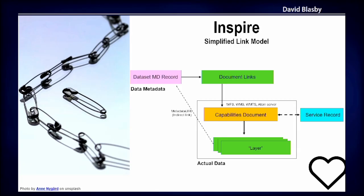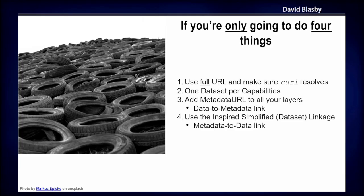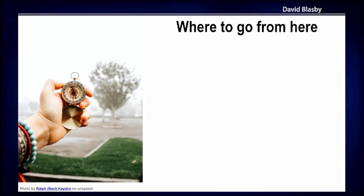Using the simplified link model plus a metadata URL for every layer gives you really nice bi-directional connectivity — it's really awesome and so easy to use. So if you're only going to do four things: one, use the full URL and make sure curl resolves it; two, one dataset per capabilities; three, add a metadata URL link to all your layers — that gives you data-to-metadata linkage; four, use the INSPIRE simplified dataset linkage — that gives you metadata-to-data linkage. Then everything is much easier.